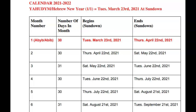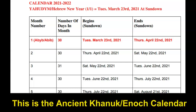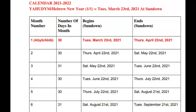For those of you who are new to this network, we use the Enoch or Canute calendar, which is based on a 364-day system. For those of you who already know about this calendar and have been following this network, here are the dates listed for 2021 through 2022.